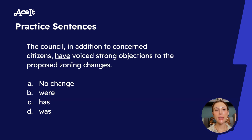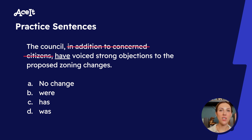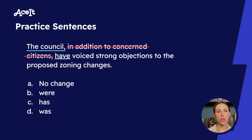'The council, in addition to concerned citizens, have voiced strong objections to the proposed zoning changes.' What is our subject? You might think it's the council and the citizens, or just the citizens, giving us a plural subject — but that is incorrect. The phrase 'in addition to concerned citizens' is a prepositional phrase that does not affect subject-verb agreement. It's an interrupting phrase, meaning if you crossed it out, it wouldn't impact the overall meaning of the sentence. Our subject is 'the council,' a collective noun and therefore singular. So let's eliminate any plural verb. 'Have' is plural, so A is out. 'Were' is plural, so B is also out.